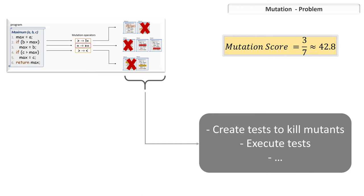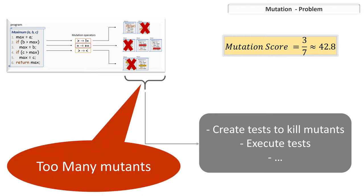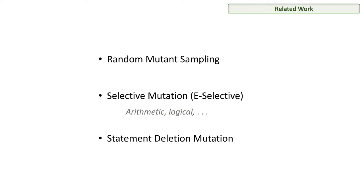Mutation testing has been known to be a very effective test adequacy criterion at finding faults in programs. One problem, however, is that the number of mutants created is often too many, making mutation testing very expensive to apply in practice. To tackle this issue, the literature has proposed several approaches: random sampling, selective mutation that chooses which mutation operators to apply, and statement deletion that only applies the statement deletion operator. However, all three approaches have been found to be similar in fault detection, and a previous study found that sampling few mutants leads to a very high fault revelation loss.